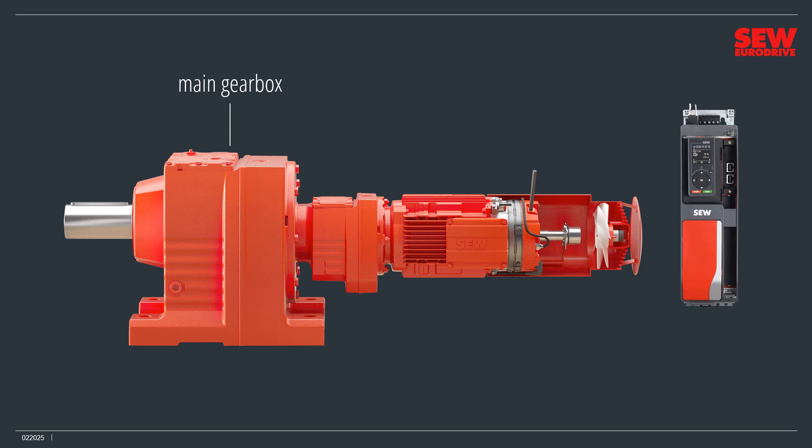Some drives include a secondary gearbox connected to the main gearbox's input side. Combining two gearboxes produces an even greater speed reduction and torque multiplication. An electric motor supplies the motive power. This drive has an asynchronous motor – a very popular motor type since it's versatile, reliable, and affordable. Drives may contain other motor types, however, depending on the application.